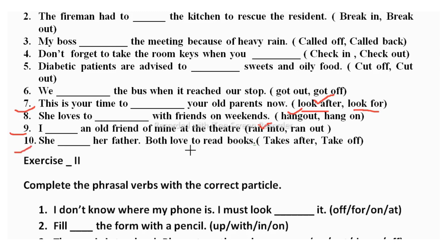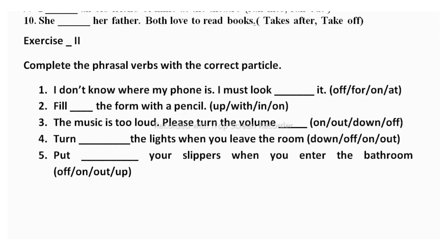Tenth sentence: 'She dashes her father — both love to read books.' Options are 'take after' or 'take off.' 'Take after' means to see someone as an example and want to be like that person. 'Take off' means to remove something. Since she wants to follow her father's habits, the correct answer is 'take after.'